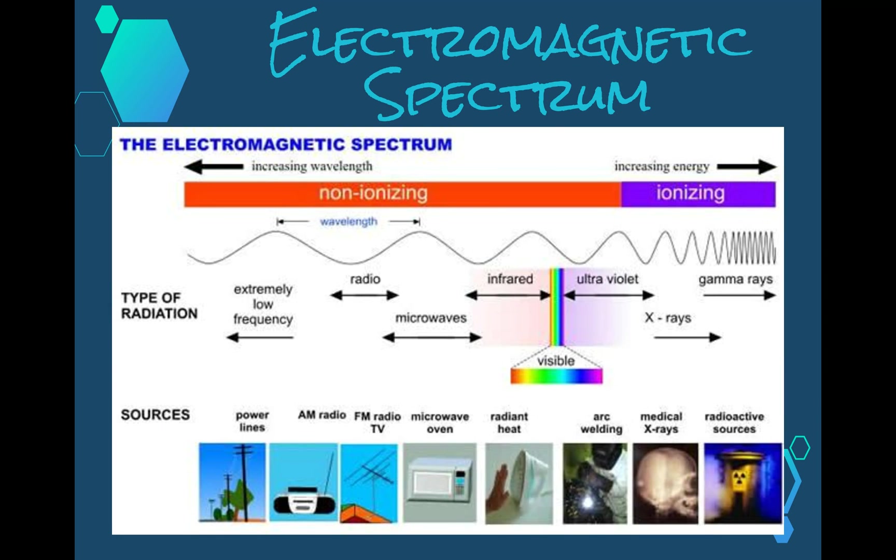This shows that the energy is associated with the changing electric and magnetic fields. It includes forms of radiation such as radio waves, TV waves, microwaves, infrared heat radiation, x-rays, ultraviolet rays, and visible light.